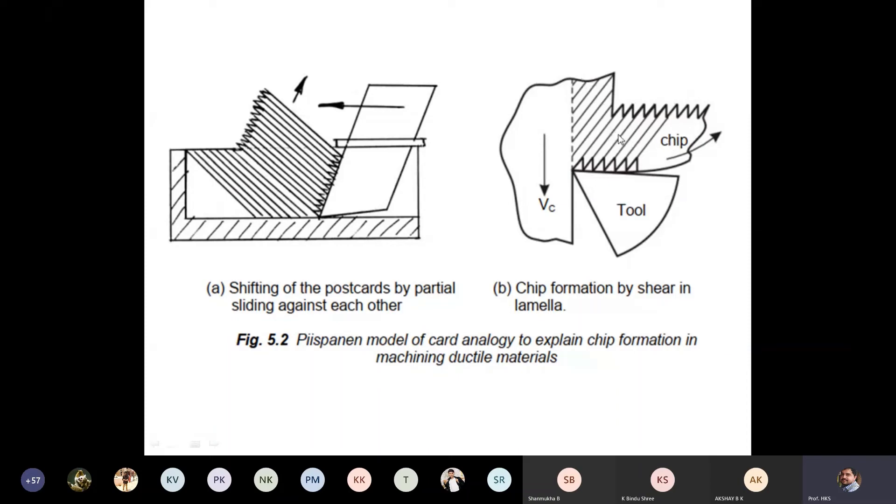What you should remember is that material will be removed layer by layer in the form of chips, and they will appear like having spikes. Here also there are spikes, but if you look at the end, here you are having a smooth surface of the chip.